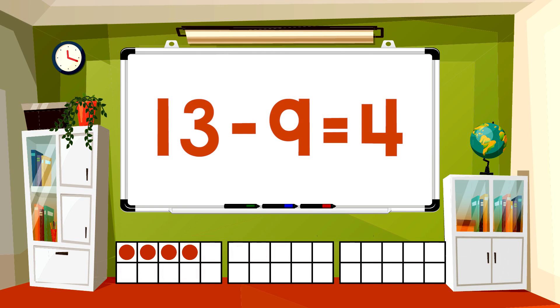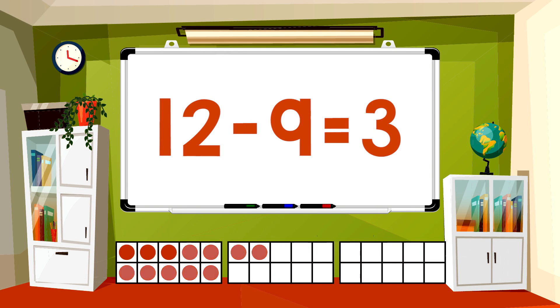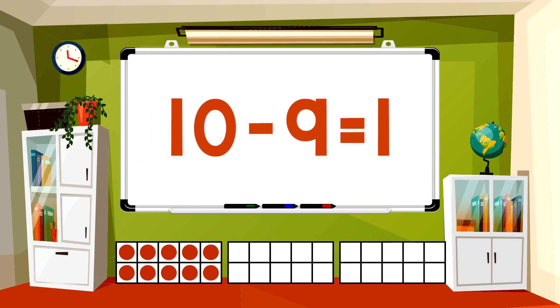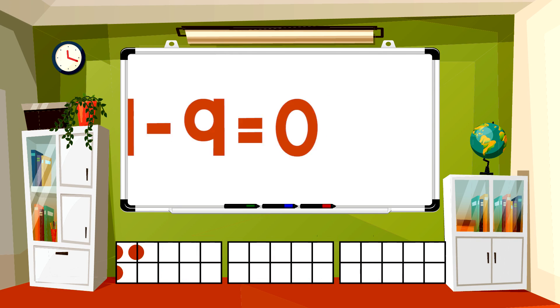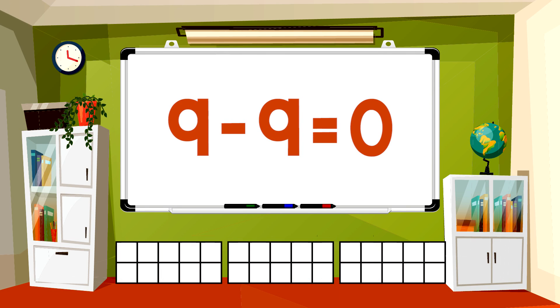13-9 equals 4, 12-9 equals 3, 10-9 equals 1, 18-9 equals 9, 9-9 equals 0.